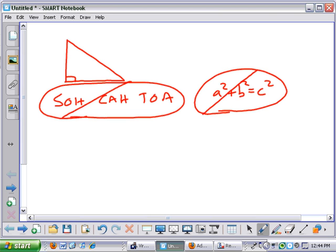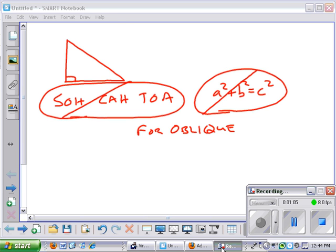So you can't use SOHCAHTOA for oblique triangles. Oblique is a fancy word for diagonal. If you draw a triangle that doesn't have a 90 degree, a vertical and horizontal perpendicular situation, then you have an oblique triangle.